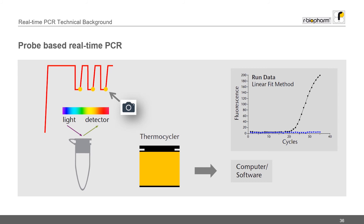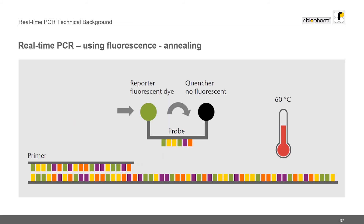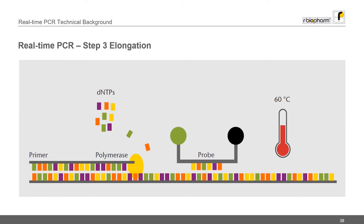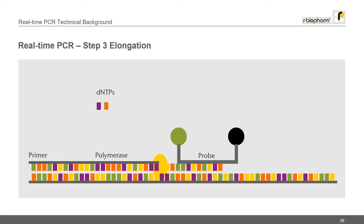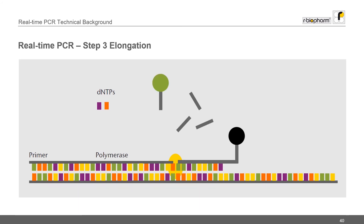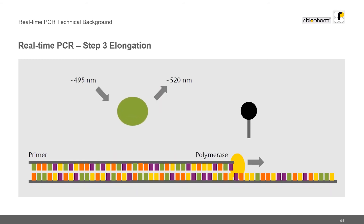As the number of copies increases during the reaction, so does the fluorescence. At rBiopharm we use a hydrolysis probe-based detection technology called TaqMan to generate fluorescence during the PCR. The probe consists of a fluorescent reporter and a quencher molecule. These target-specific probes are designed to bind downstream of the primers during the annealing step. As long as the reporter and quencher are physically close to each other, no fluorescence is emitted. The probe is then cleaved by the polymerase enzyme during the elongation step, separating the reporter and quencher, so the quencher no longer suppresses the reporter and the level of fluorescence increases. With every cycle of PCR, more probes are cleaved and more fluorescence is generated.